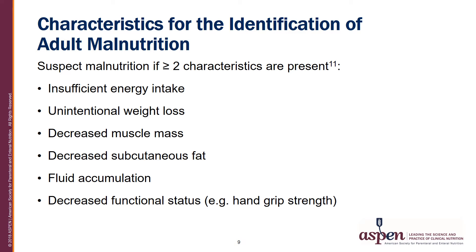There are six characteristics that should be evaluated for the identification of adult malnutrition. Clinicians should suspect malnutrition if two or more of the following characteristics are present: insufficient energy intake, unintentional weight loss, decreased muscle mass, decreased subcutaneous fat, fluid accumulation, and decreased functional status generally evaluated by hand grip strength.